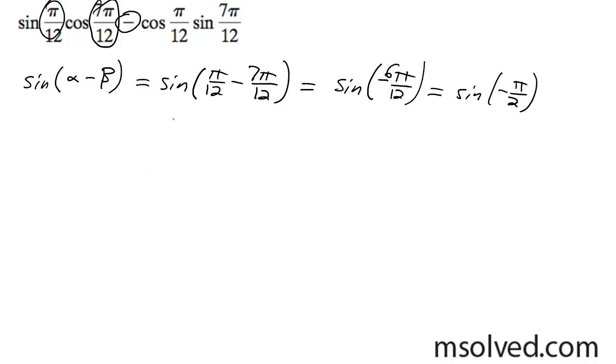Now what happens here, we've got our unit circle, it's all the way down, it's right here, which is negative 1.